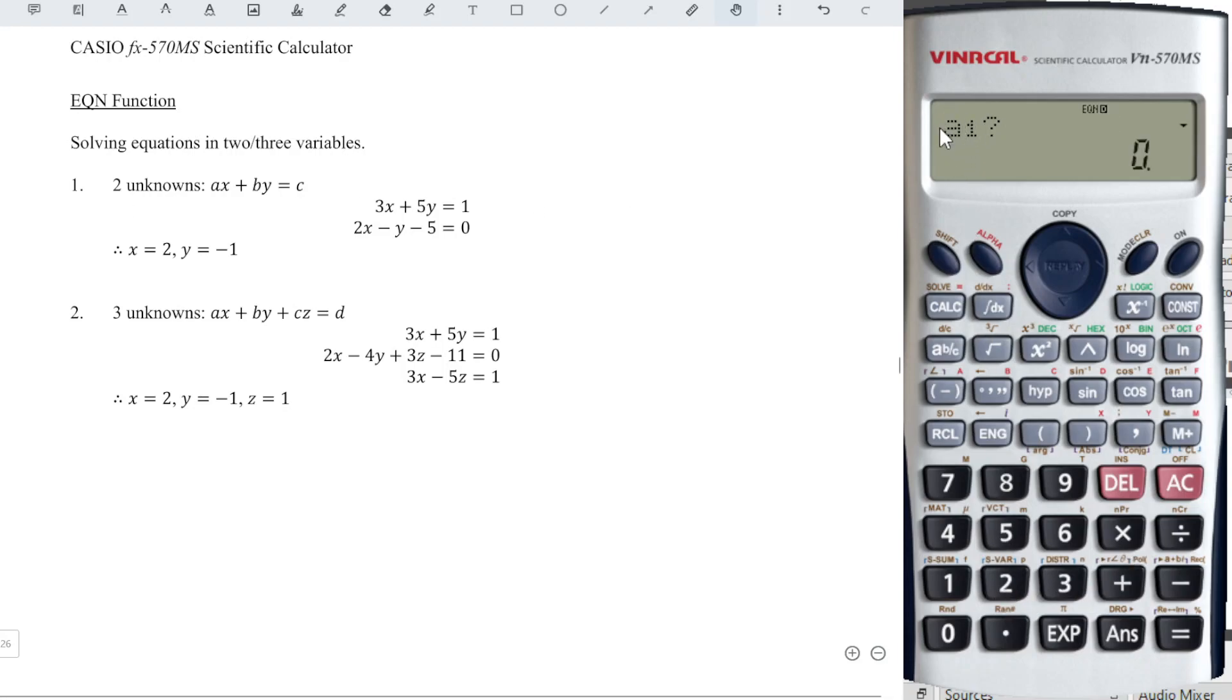A1 is the coefficient of the first variable. One is the first equation. So which means that A1 represents the coefficient of the first variable of the first equation, which is number three. And we input three and press equal. So B1 same, the coefficient of the second variable of the first equation, which is five.